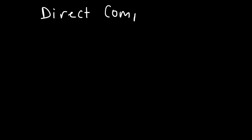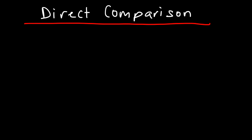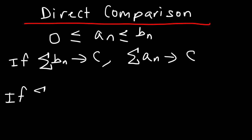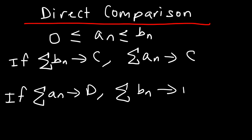Now let's talk about the direct comparison test. We need to have two sequences, a sub n and b sub n, where b sub n is the big sequence and a sub n is the small sequence. The basic idea: if the big series converges, then the small series will converge as well. Likewise, if the small series diverges, then the big series diverges as well.